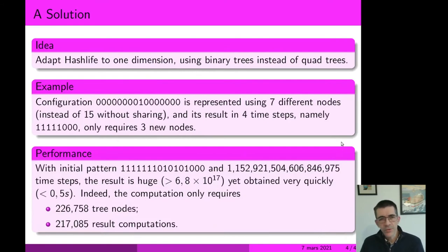The possible solution to that problem was to adapt HashLife algorithm to dimension 1, which means that you use binary trees instead of quadtrees. For instance, if you have this configuration of length 16, you can represent it with a binary tree of two configurations of length 8, and themselves they are represented as two configurations of length 4, and so on. If you do maximal sharing of those binary trees, you can represent these configurations with only seven different nodes instead of 15.